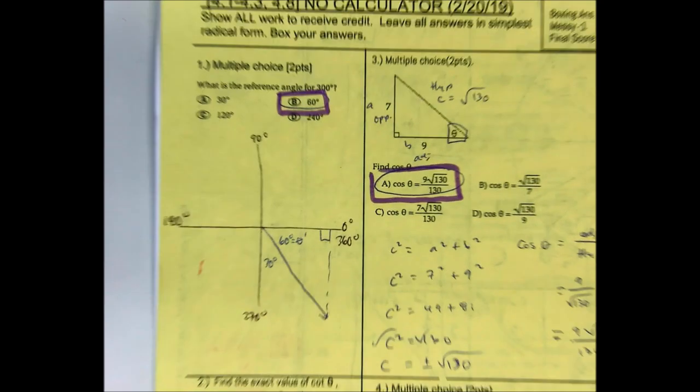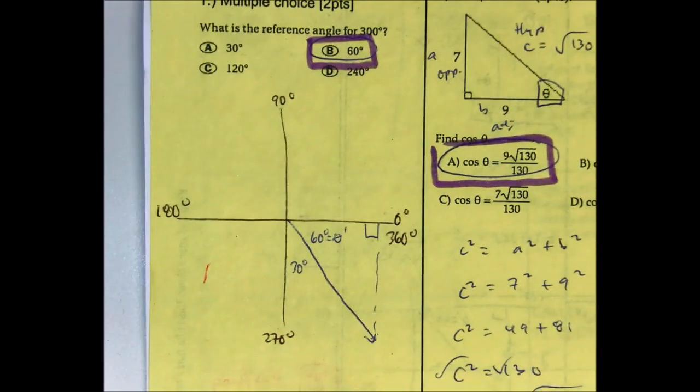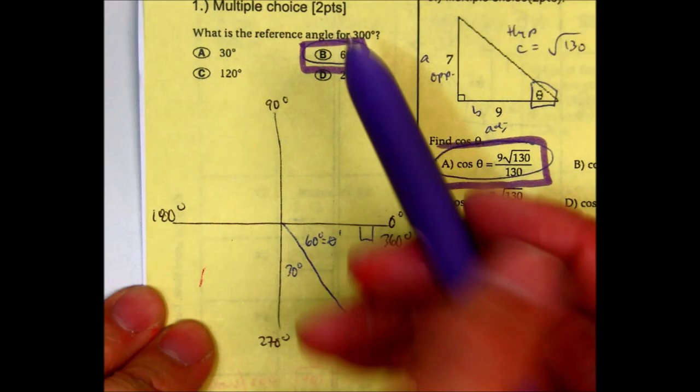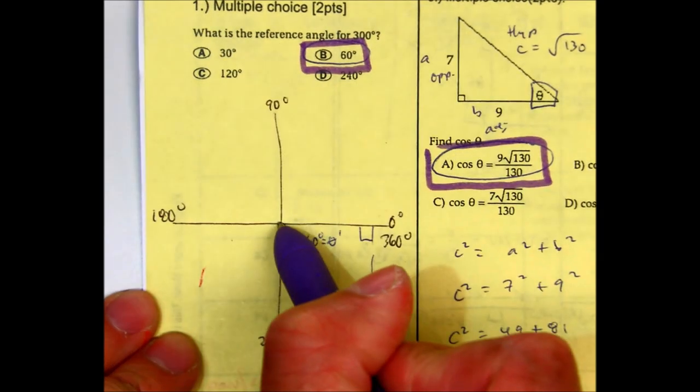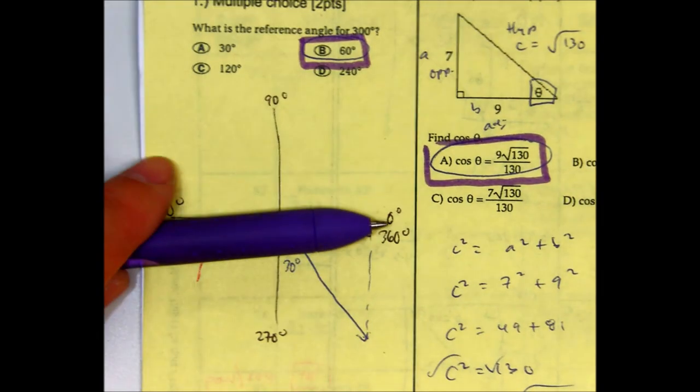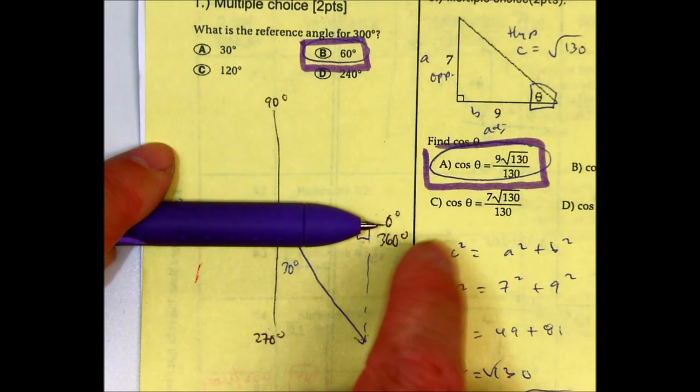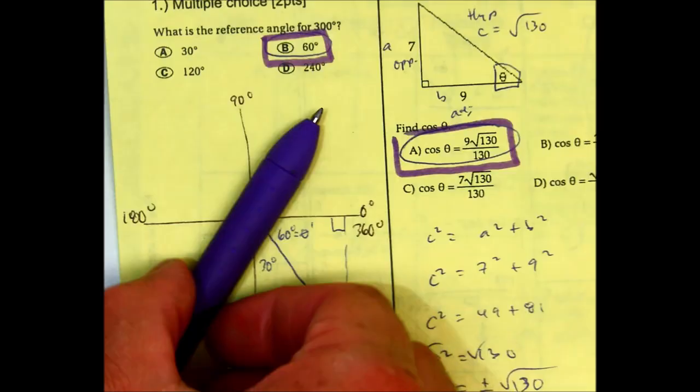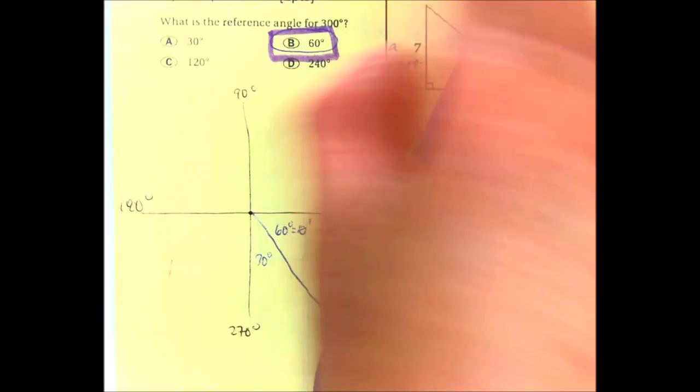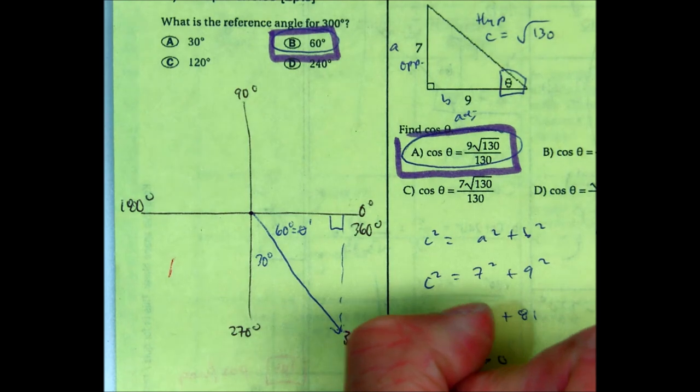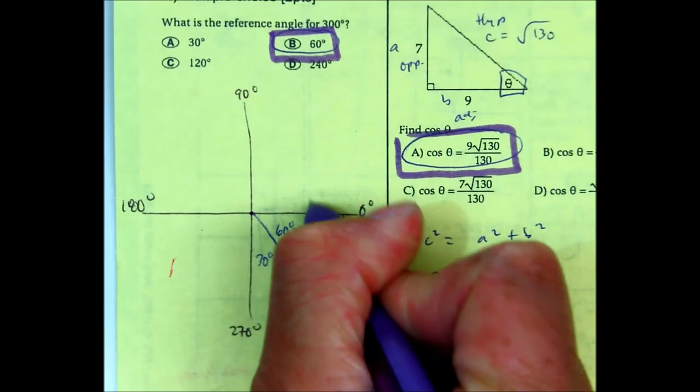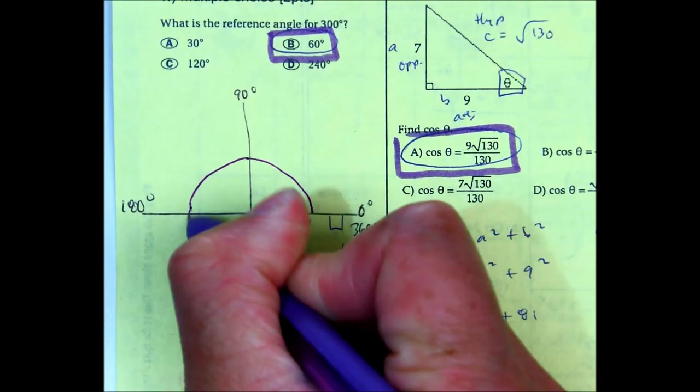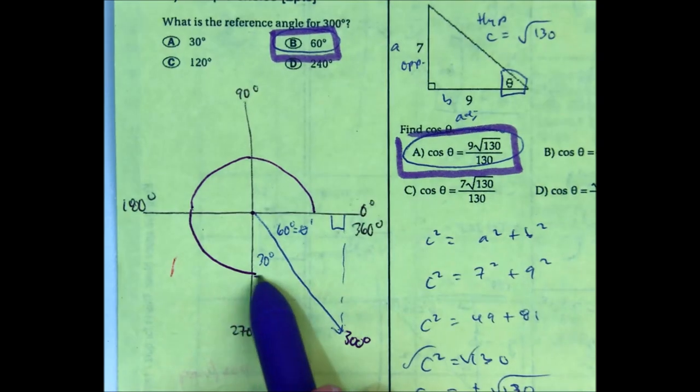Question number one. What is the reference angle for 300 degrees? Remember, you're starting in standard position, 0 degrees, and you go counterclockwise for positive degrees. So that would be 90, 180, 270. This would be 300 degrees. So basically, 90, 180, 270, and then this would be 30 degrees.